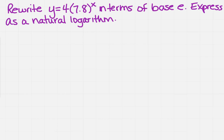We want to rewrite y equals 4 times 7.8 to the x in terms of base e. So if we have to write this in terms of base e, that means we've got to figure out a way to write it so that the base is going to cancel out.